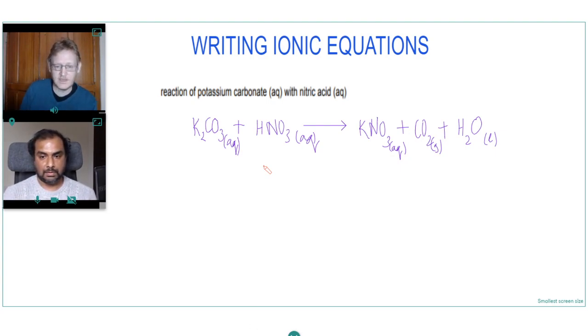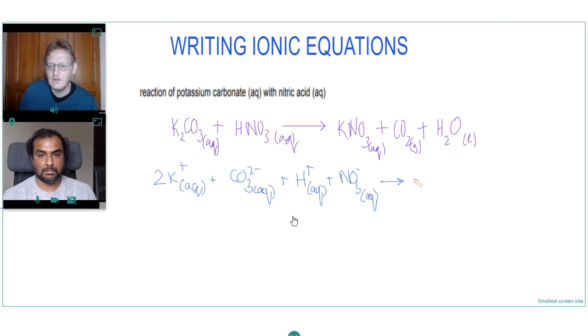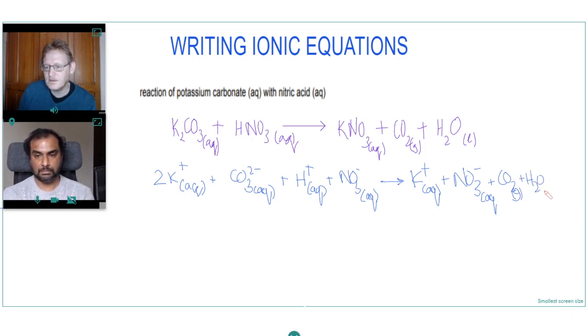So now to turn this into ionic equation, we just write out the aqueous ions that are here. So we would have two aqueous potassium ions and an aqueous carbonate ion, an aqueous hydrogen ion, aqueous nitrate ion, making this a bit big. So aqueous potassium ion, aqueous nitrate ion. And then we've got our carbon dioxide gas and water liquid.